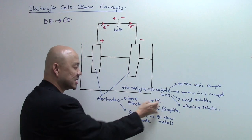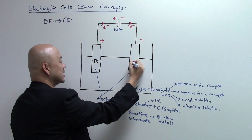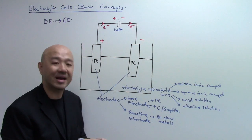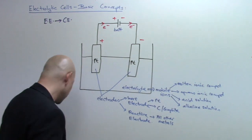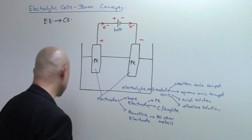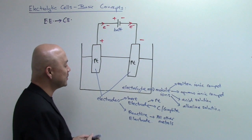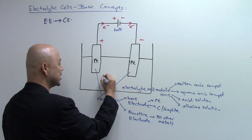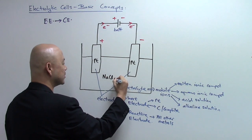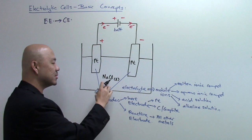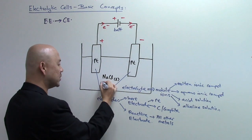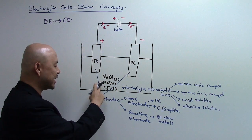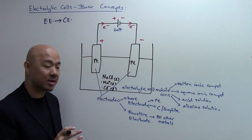Let's choose platinum as our inert electrode — it does not affect the redox reaction. For the electrolyte, let's choose molten sodium chloride, NaCl (liquid/molten). In molten NaCl we have two ions: Na⁺ (the cation) and Cl⁻ (the anion).